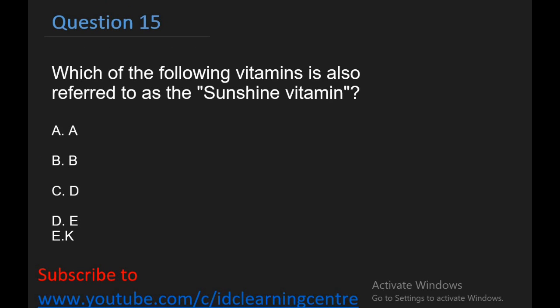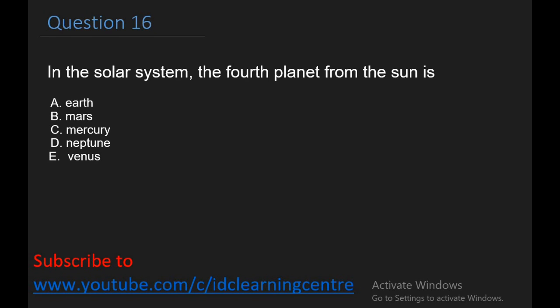Question 15: Which of the following vitamin is also referred to as the Sunshine vitamin? Is it vitamin A, B, D, E or K? The right answer is vitamin D. So the right option is C. Now the reason is that vitamin D is produced by the body in response to sun exposure. That is why it's called sunshine vitamin. Question 16: In the solar system, the fourth planet from the sun is what? Earth, Mars, Mercury, Neptune, or Venus? The right answer is Mars. Mars is the fourth planet from the sun.